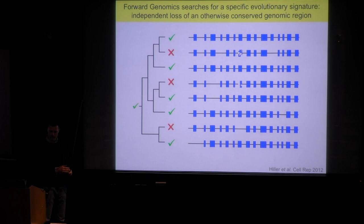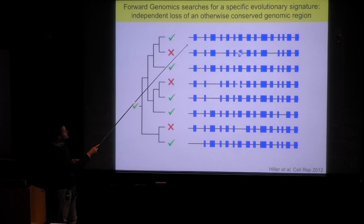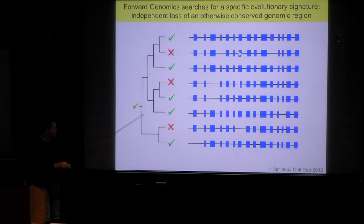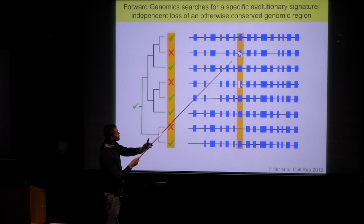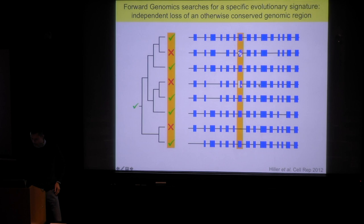This approach conducts a genome-wide screen — all the lines here represent the entire genome. The method focuses on regions in the genomes that are overall conserved between species, and tries to find those regions that are more diverged, or sometimes even completely lost, in those species that have changed or lost a particular phenotype. In other words, we try to find an association between the phenotypic difference pattern and the genomic divergence pattern.